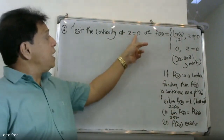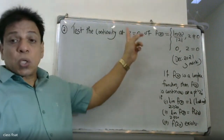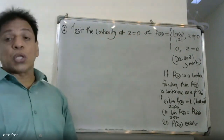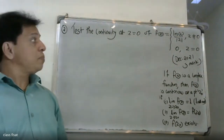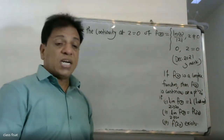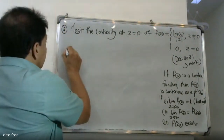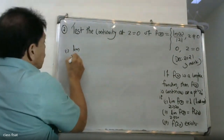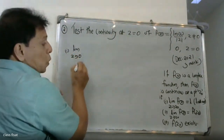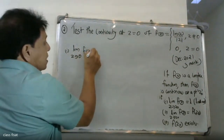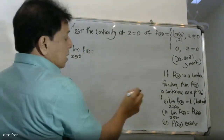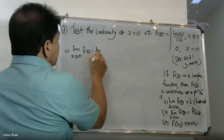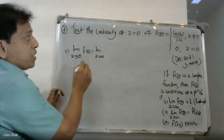Now for this question, we check continuity at z equal to zero. We check the first condition: does the limit as z tends to zero of f of z exist? We write the limit as z tends to zero.